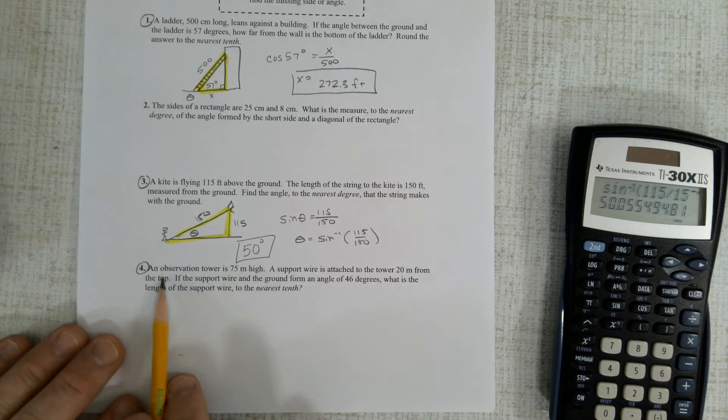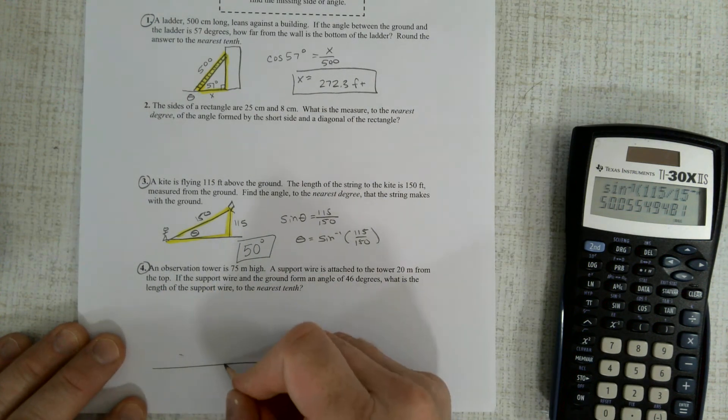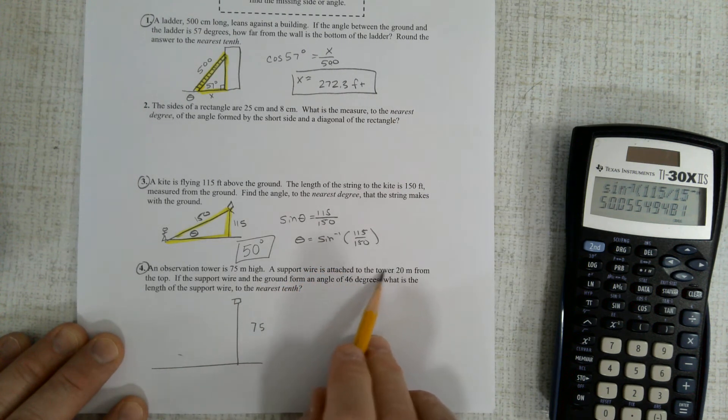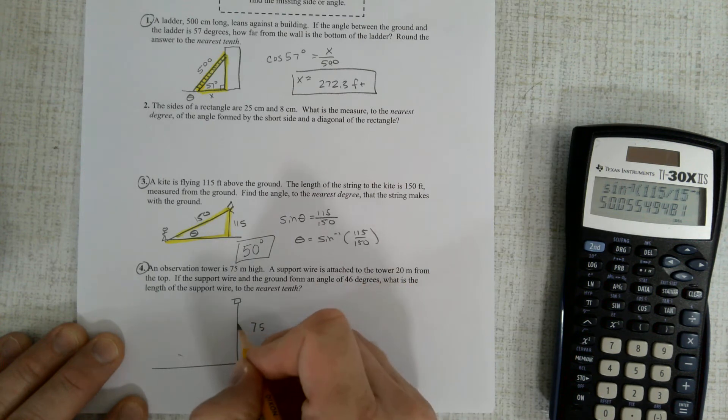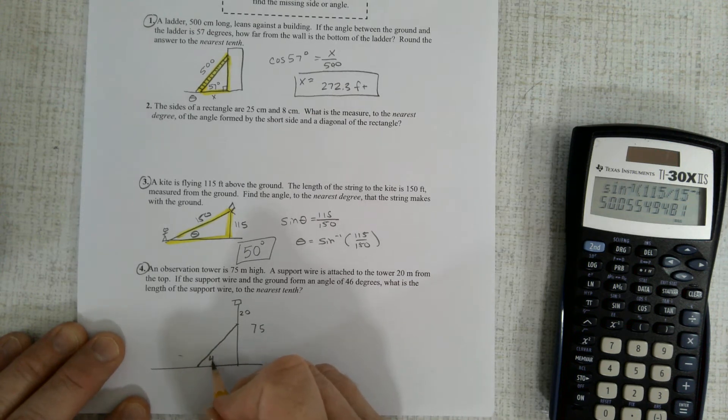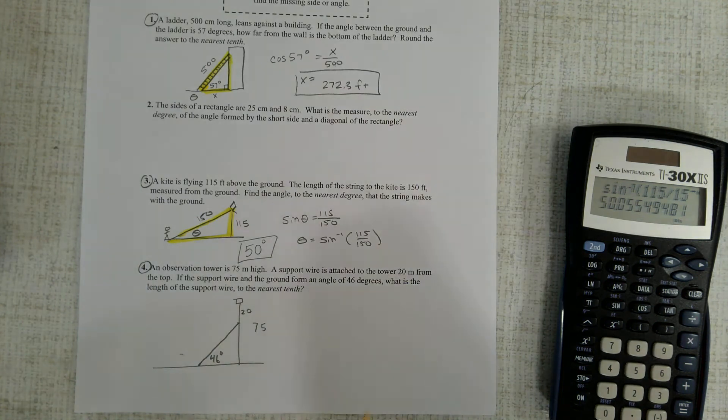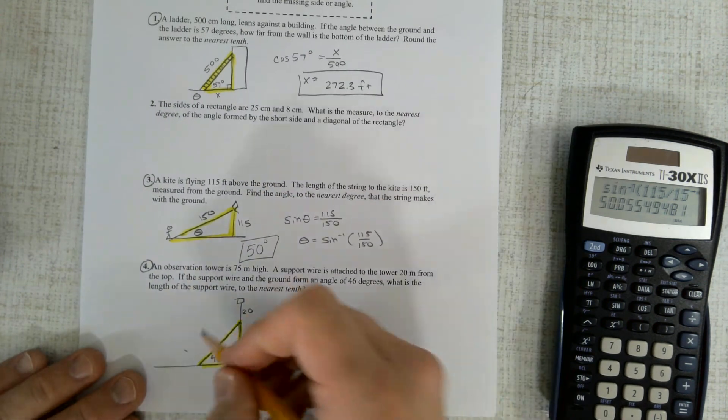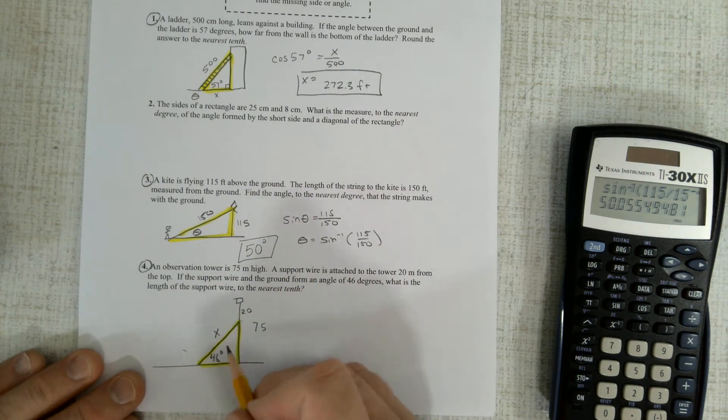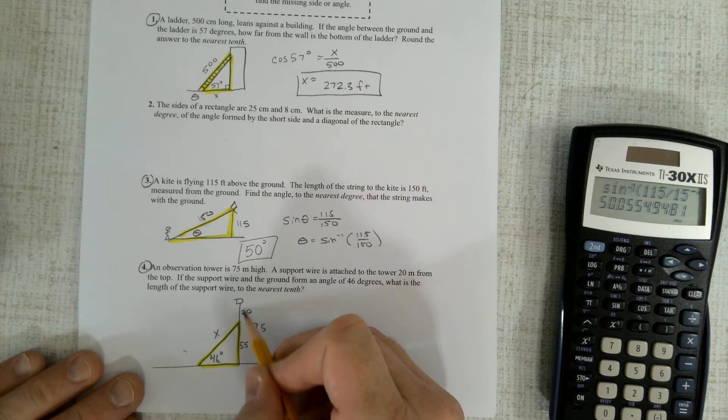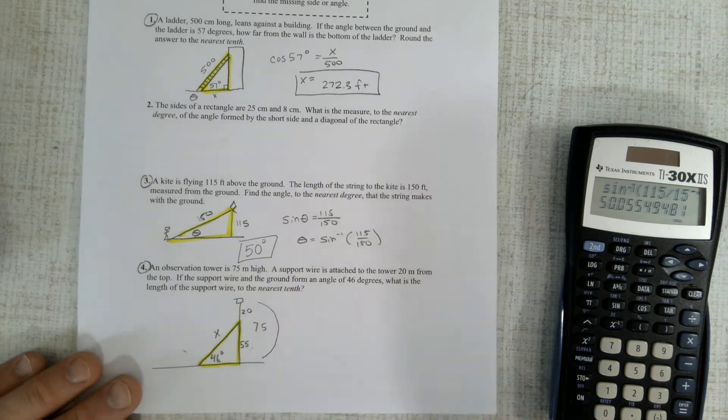All right, going on here, an observation tower is 75 feet high. So here's my tower, and the tower is 75 feet high. Support wire is attached 20 to the tower, 20 meters from the top. So down here, 20, there's a support wire. And it makes an angle with 46 degrees. What is the length of the wire? Well, there's my triangle. The length of the wire is what I need, so that's this. But my triangle, make sure you're using the number, wouldn't that be 55 right there? Make sure you're using this 55 down here, because that 20 is the extra part above it. And 20 and 55 makes 75, because 75 is this whole distance here.